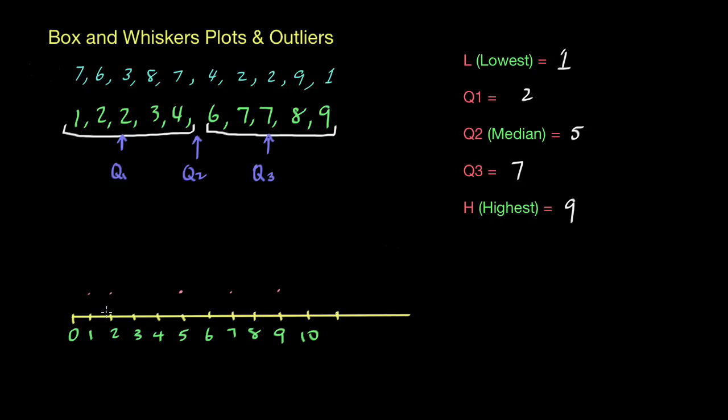Now using a ruler you need to make sure this is neat. We have our whiskers on either side. So from here to here is a whisker. From here to here we have a whisker, and then we have a box that goes from Q1, that value of two, right through to Q3.